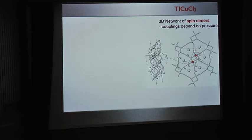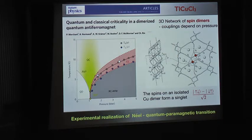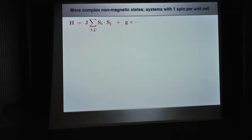These dimers are coupled to each other through several interaction paths. In the experiment, one can drive the system through a quantum phase transition by going to low temperature and changing the pressure, which weakens the interactions causing singlet formation, allowing entry into an ordered Néel state. This is essentially the only example of an antiferromagnet that can be tuned through this kind of phase transition.